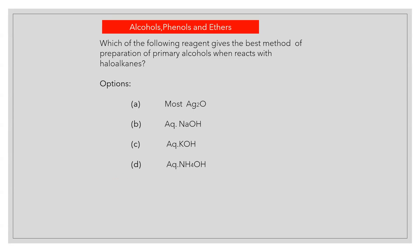Which of the following reagent gives the best method of preparation of primary alcohols when reacts with haloalkanes? Answer A: Moist silver oxide.